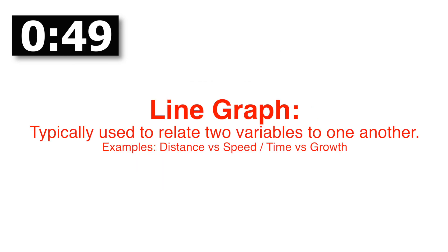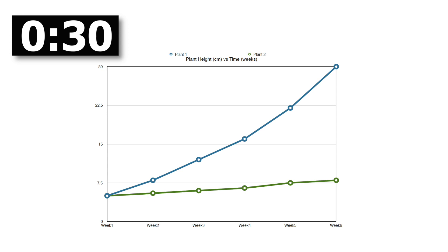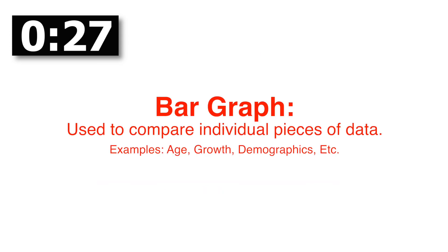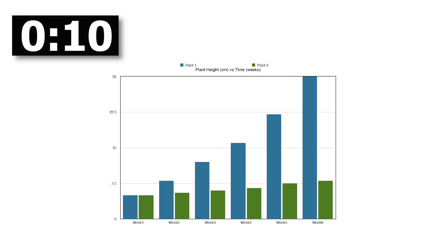A line graph is a great representation of measured data. In this example you can clearly see plant growth and compare two variables — how the plant that received fertilizer outgrew the one that received none. The x-axis typically represents time, the horizontal axis. Finally, a bar graph can also be used for our plant experiment: a side-by-side comparison makes it very obvious that the fertilized plant grew much faster and healthier than the one without fertilizer.